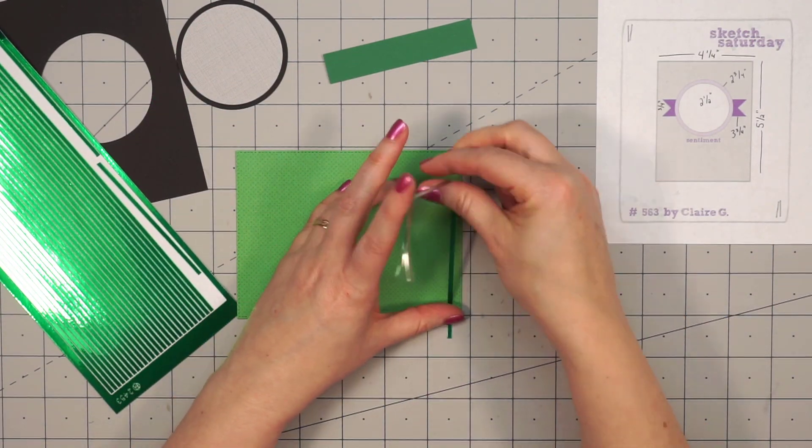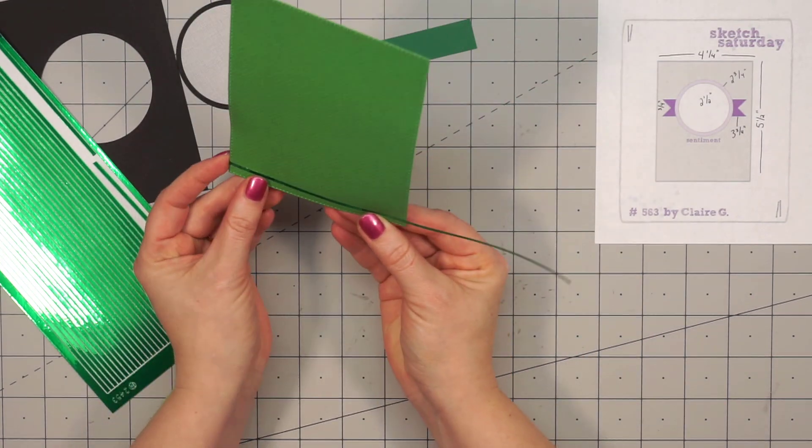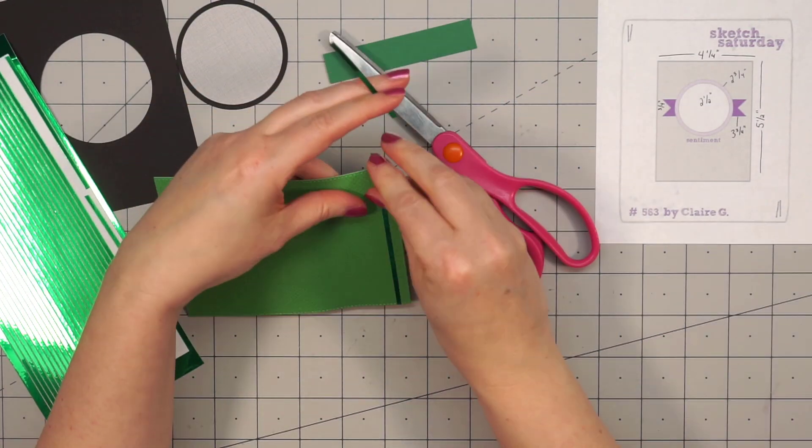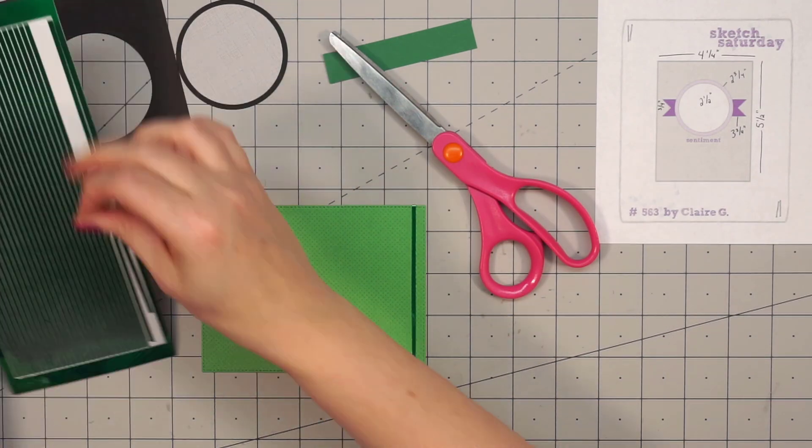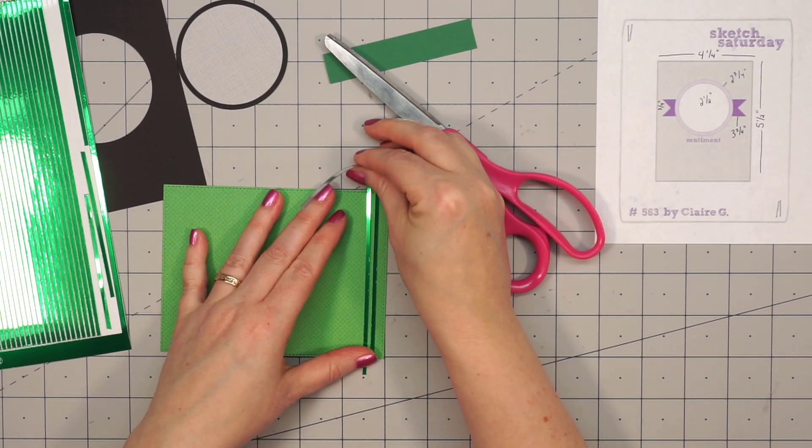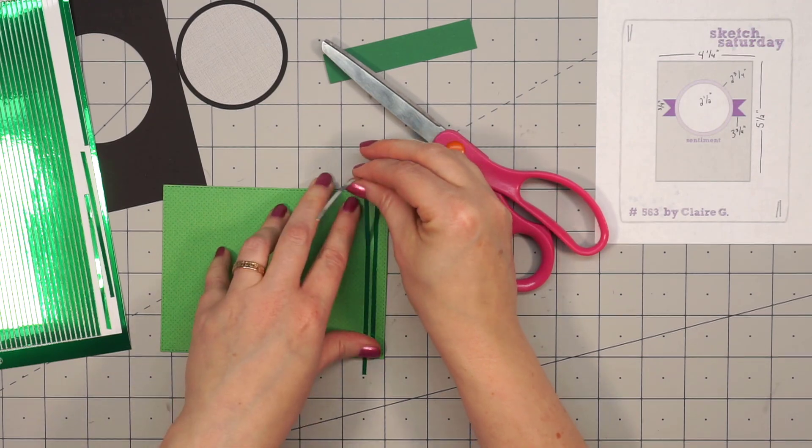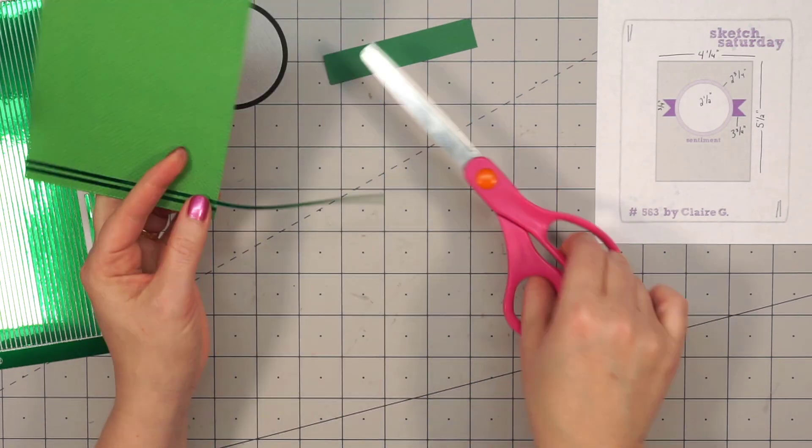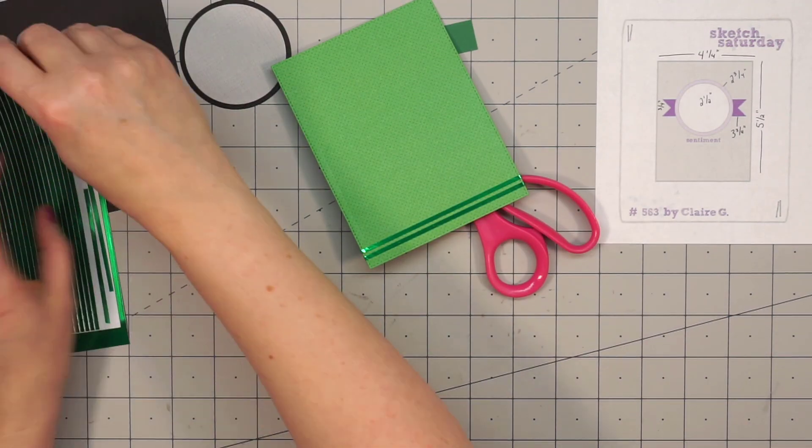I'm just using a polka dot tone-on-tone paper for the background and I'm adding a couple of Love from Lizzy peel-offs just to the bottom portion of the card. These are the straight peel-offs in a green mirror color. Really pretty, it has a lovely shine to it.